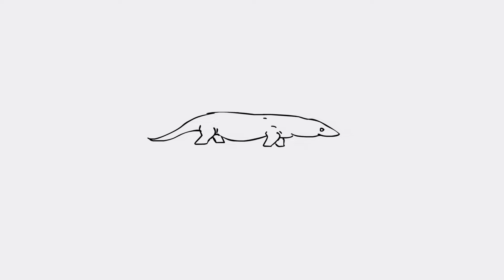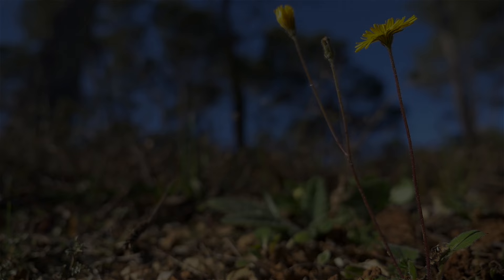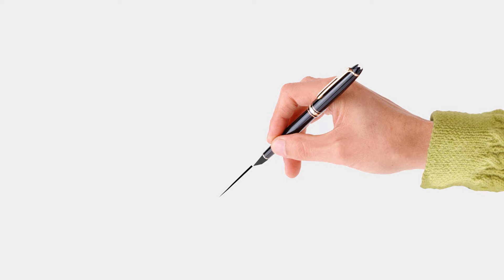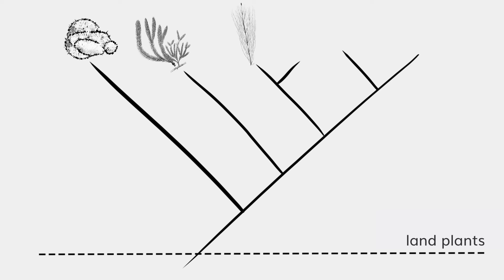Phylogenetic trees are also primarily useful to understand the evolution of all forms of life. Here is an example: this is a simplified phylogeny of all land plants. These include mosses, lycopods, horsetails, ferns, conifers, and flowering plants. Just to be clear, I am really simplifying the story here — this is only to give you an idea of what this tree looks like.